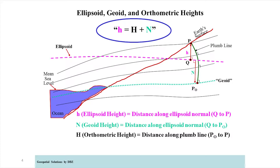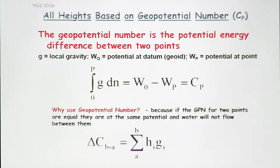If you could level and have an instrument right on the equal potential surfaces, then you wouldn't have that problem. Basically, it has to do with the fact that what's underneath you is different everywhere you level. This is a straightforward equation — what we do in the adjustment is we take and compute a potential difference. We take our level difference and apply gravity information. That potential difference tells us which way water will flow. When you do the adjustment, you end up with that.